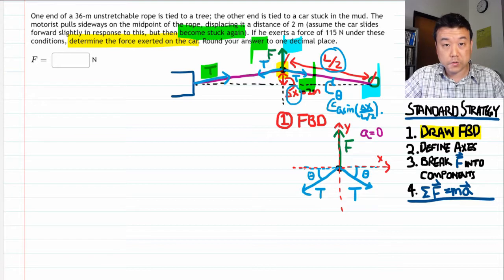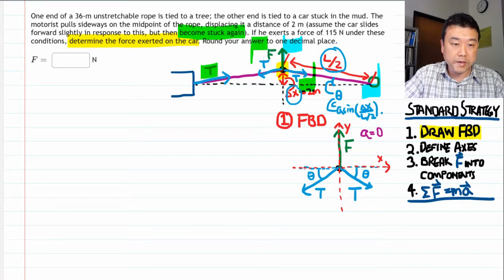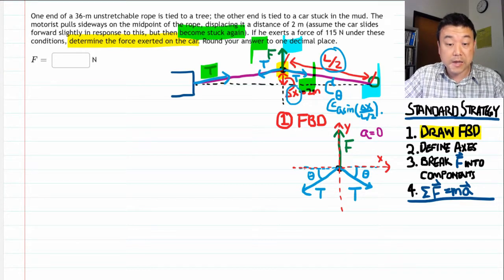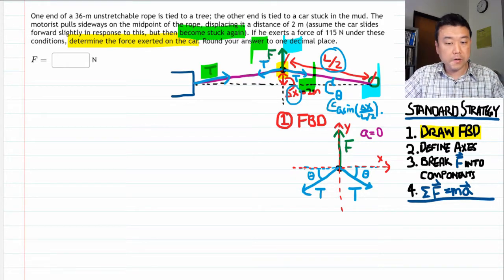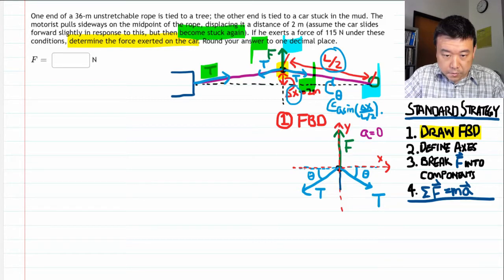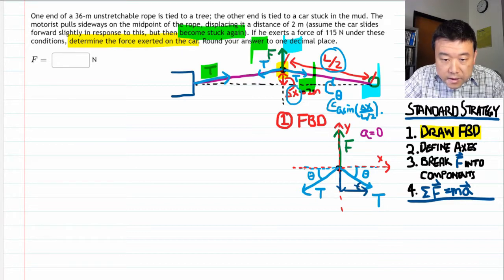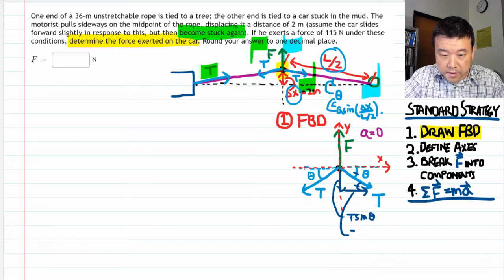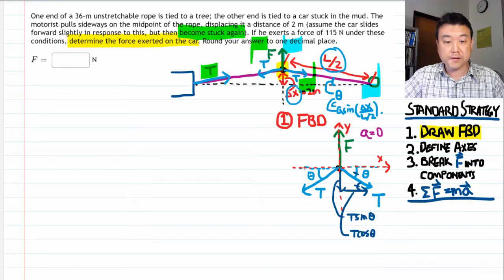All right. So next step, I have to break forces into components. So the only force I need to worry about right now is the tension force. There's technically two of them, but let me just do one as an example. So the tension can be broken into y component and the x component. And this angle here is the same angle as that theta. So the y component should look like t sine theta because it's opposite to that angle. And the x component looks like t cosine theta because it's adjacent to that angle.